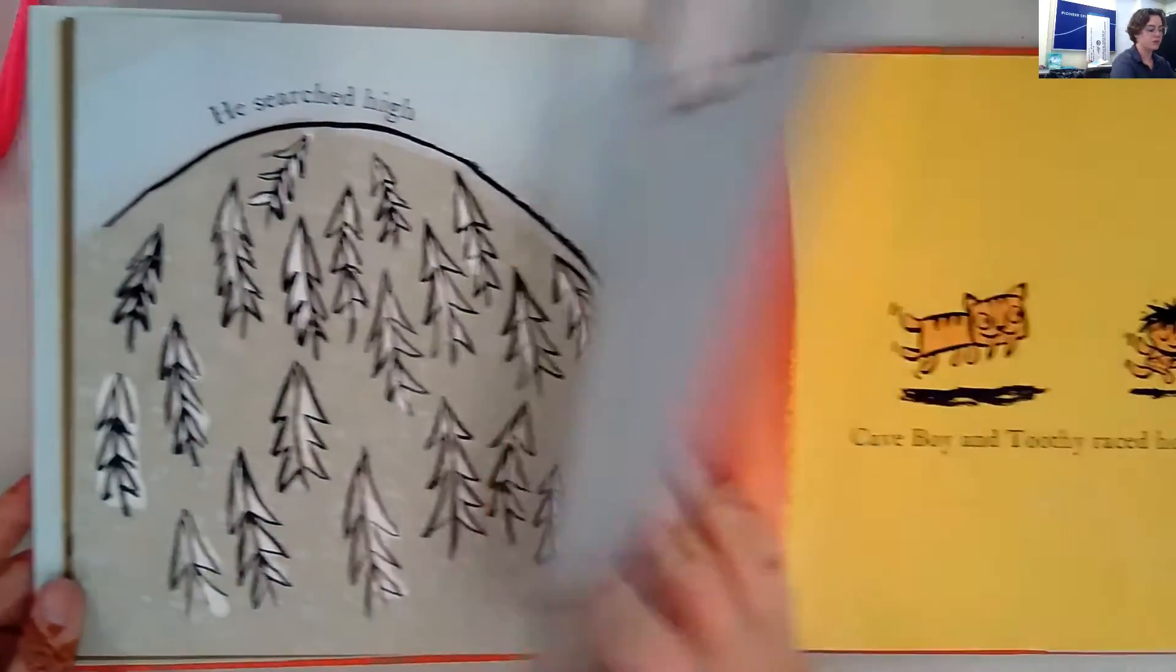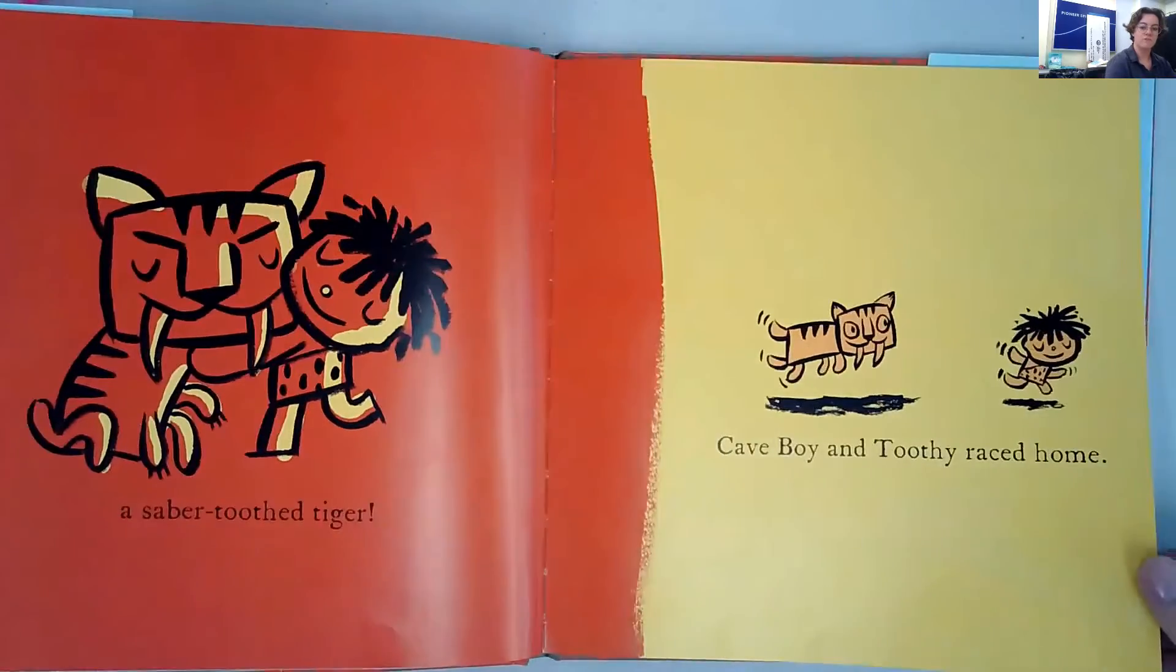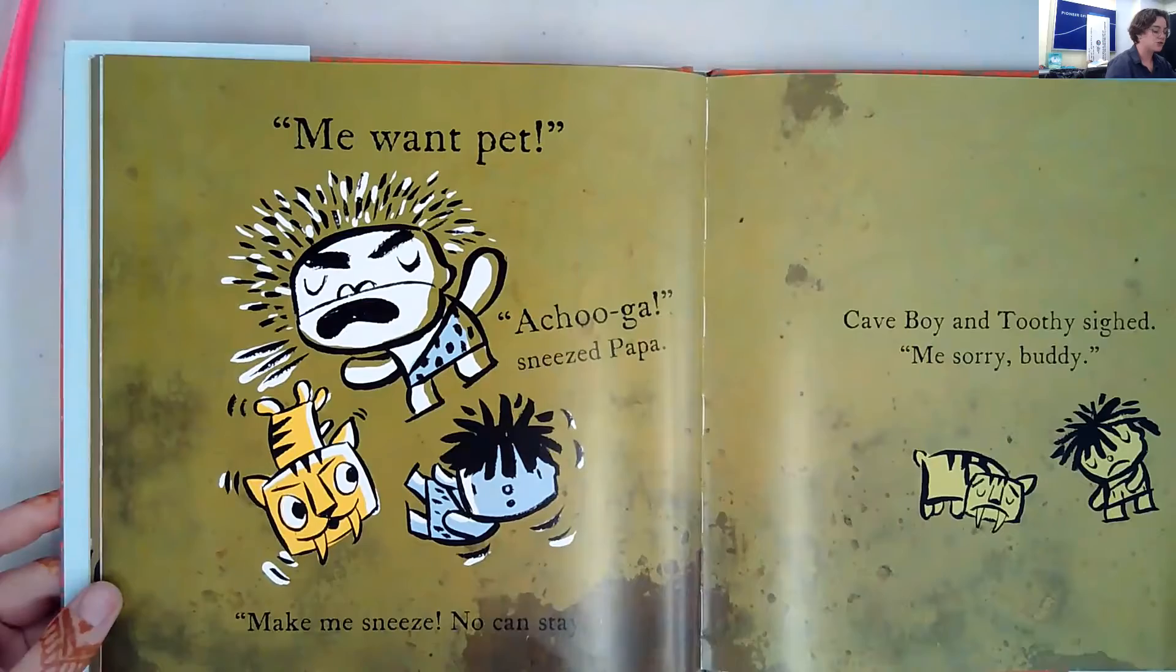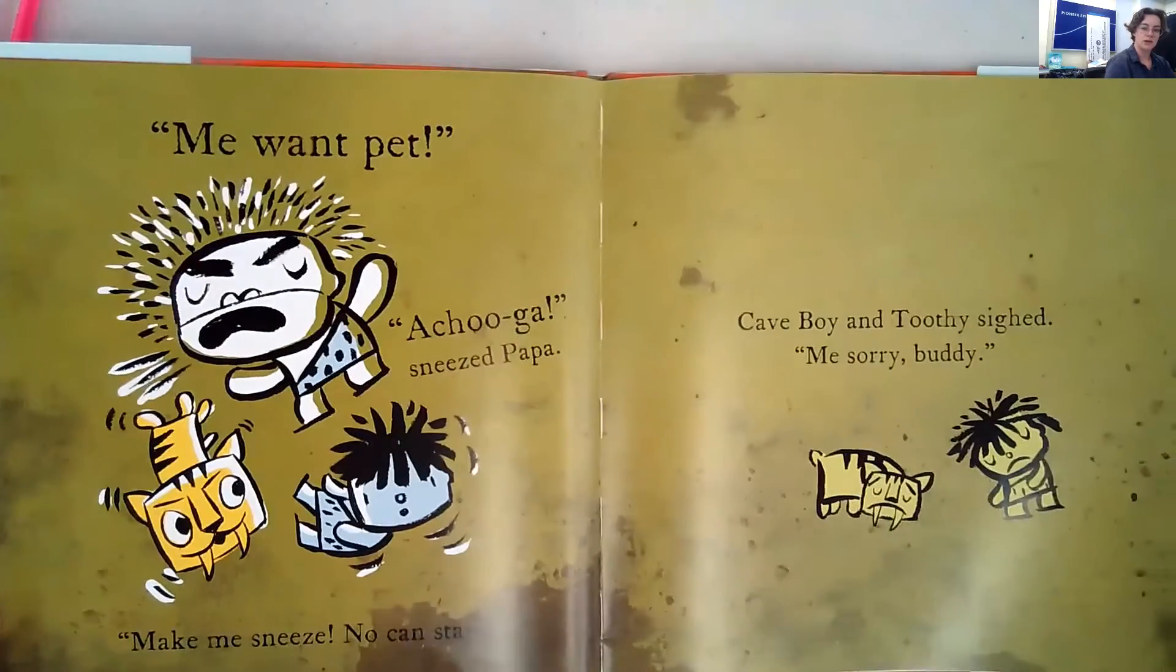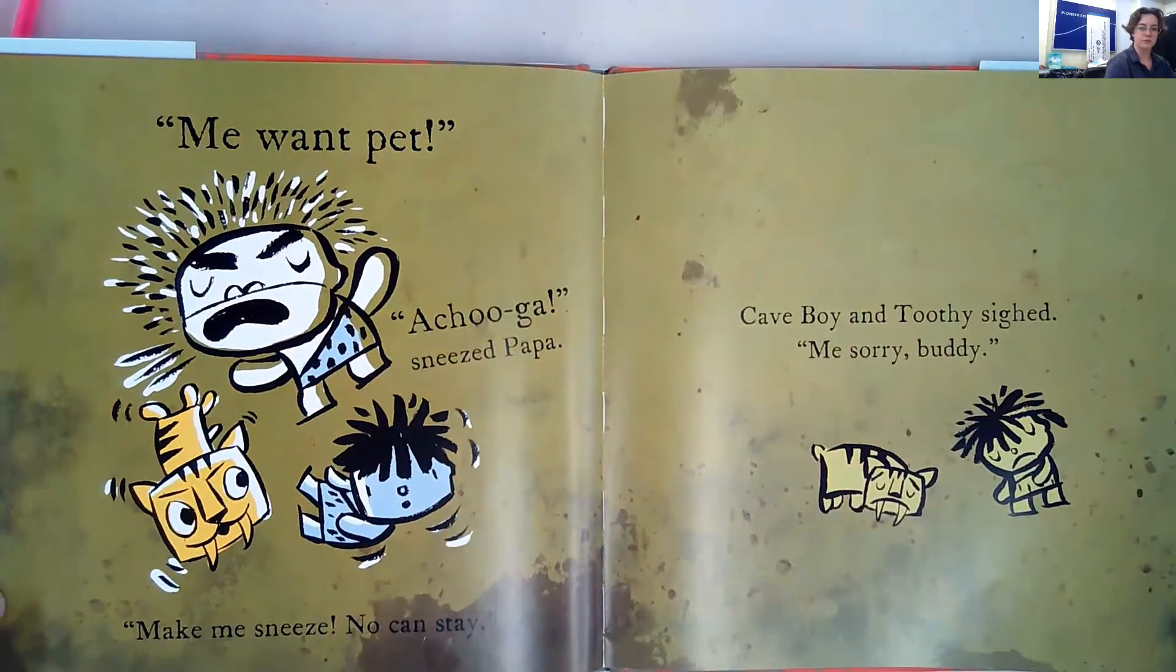He searched high and low until he found a saber-toothed tiger. Cave boy and toothy raced home. 'Me want pet.' 'Achoo,' sneezed papa. 'Make me sneeze. No can stay.' Cave boy and toothy sighed. 'Me sorry, buddy.'